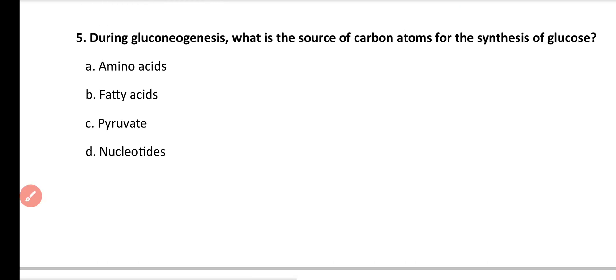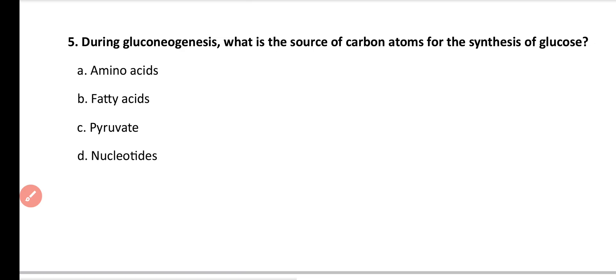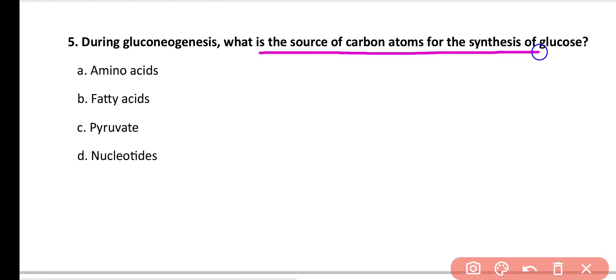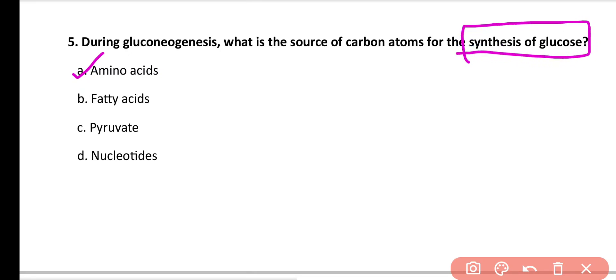Question number 5: During gluconeogenesis, what is the source of carbon atoms for the synthesis of glucose? Options: amino acids, fatty acids, pyruvate, nucleotides. Correct answer is option A. Amino acids are the primary sources of carbon atoms for the synthesis of glucose.